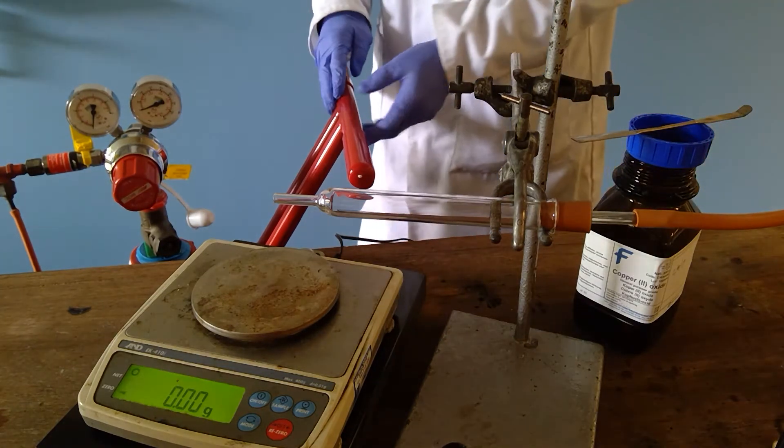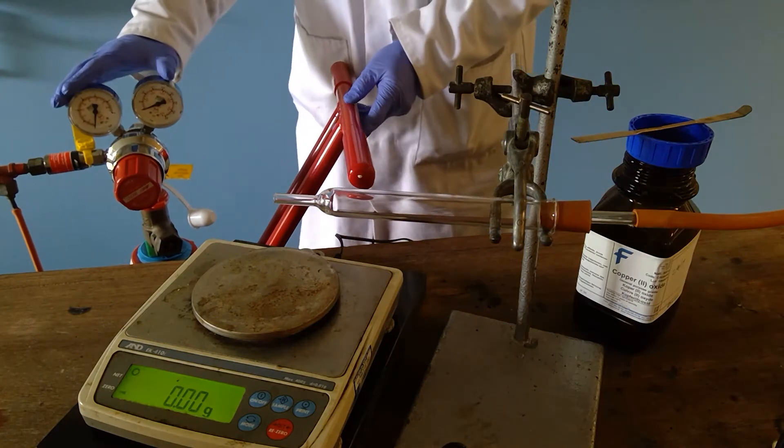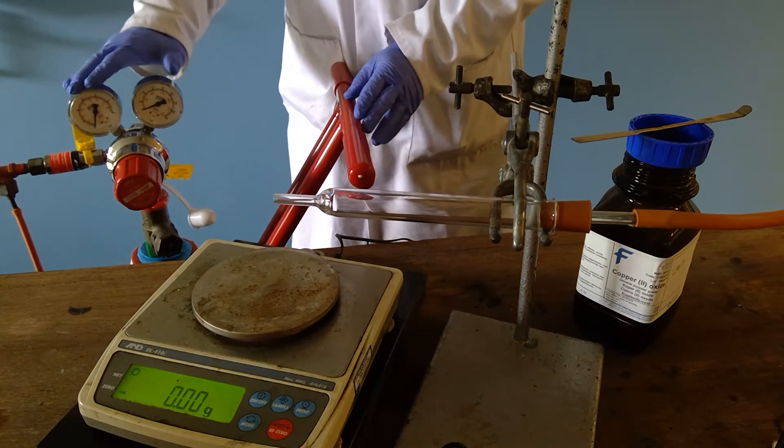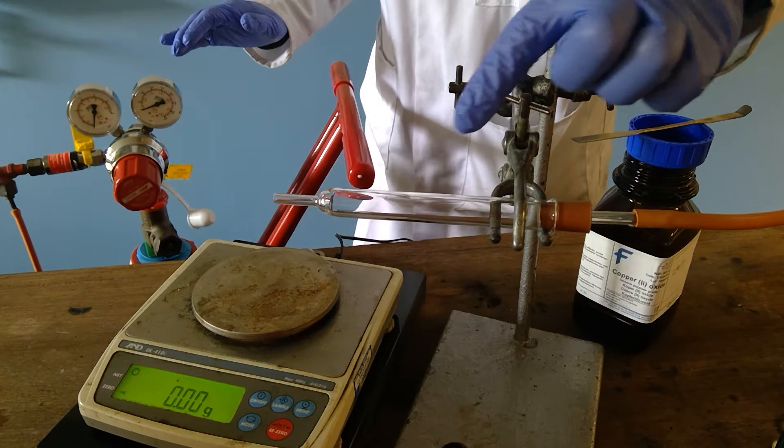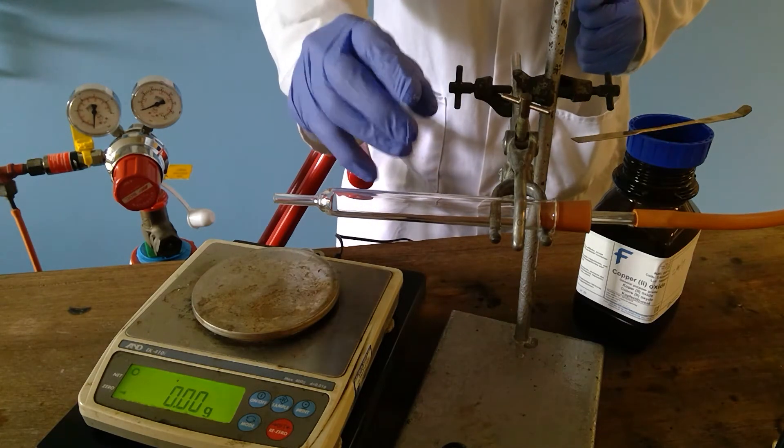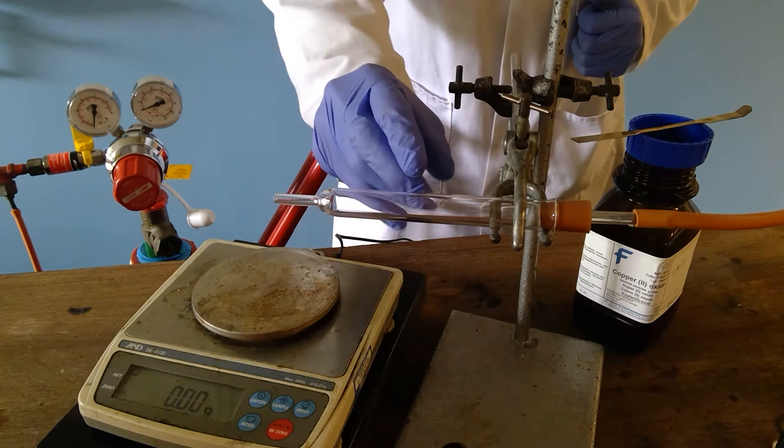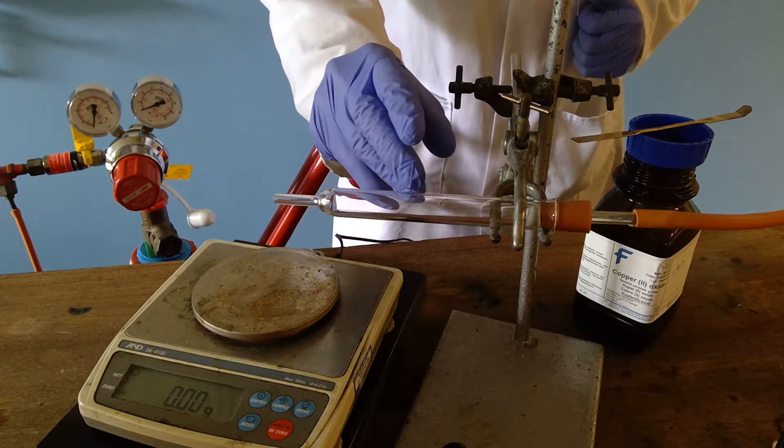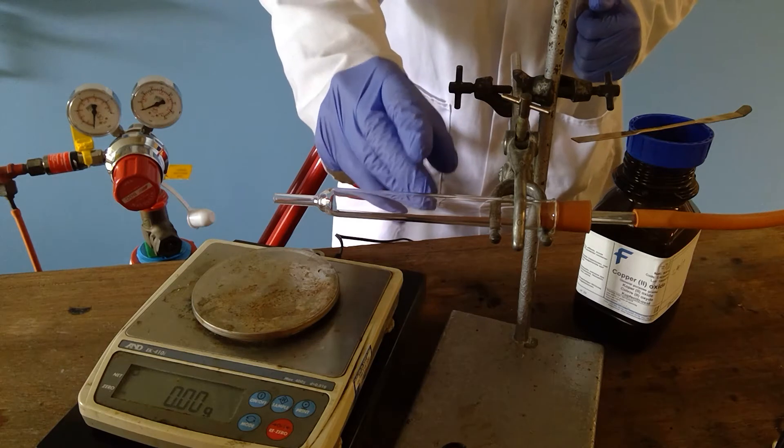The gas that we're going to pass over, hydrogen, comes from a cylinder. We will pass the hydrogen across the copper oxide, which will be in this combustion tube. The combustion tube will be heated, and the copper oxide reacts only with the hydrogen when it is hot.